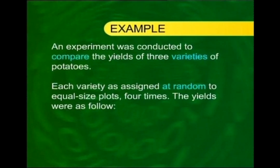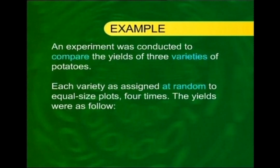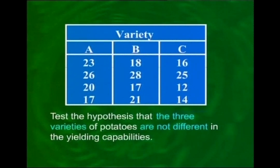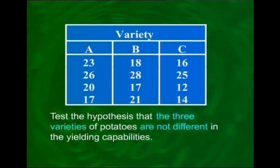To illustrate: an experiment was conducted to compare the yields of three varieties of potato. Each variety was assigned at random to equal-size plots four times. The yields were: Variety A — 23, 26, 20, 17; Variety B — 18, 28, 17, 21; Variety C — 16, 25, 12, 14. We need to test whether the three varieties differ in their yielding capabilities.